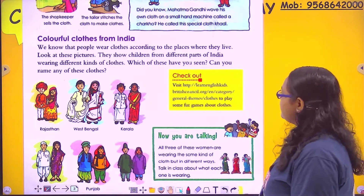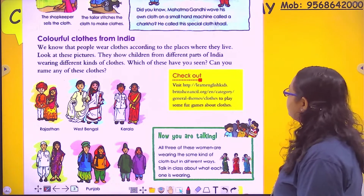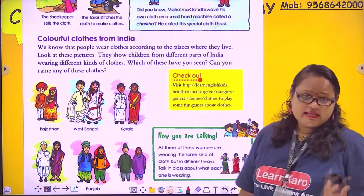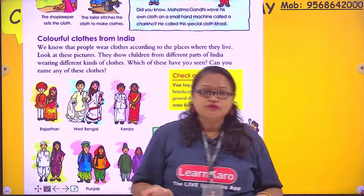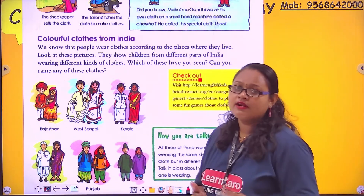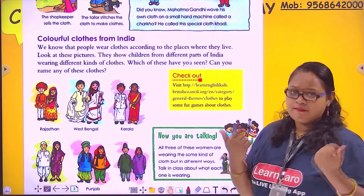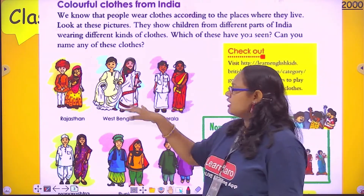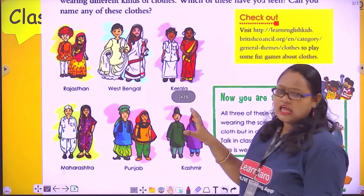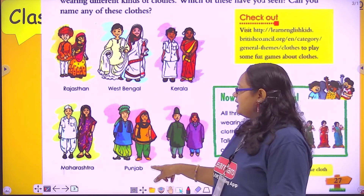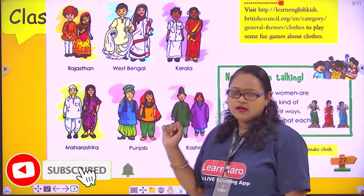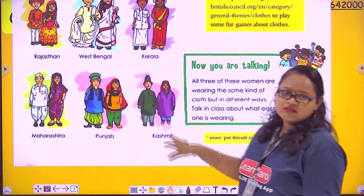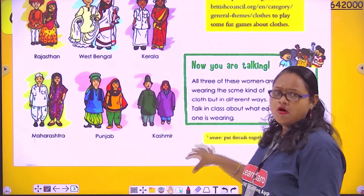Now, colorful clothes from India. Indian people wear different types of clothes according to the places they live. Look at these pictures — they show children from different parts of India wearing different kinds of clothes. In Rajasthan they wear ghagra choli, in West Bengal dhoti kurta and saree, in Kerala lungi and dhoti, in Maharashtra dhoti, in Punjab kurta pyjama and salwar suit, and in Kashmir they wear their traditional attire.